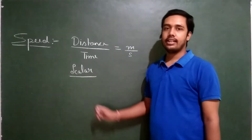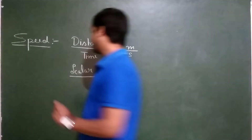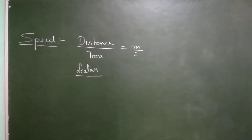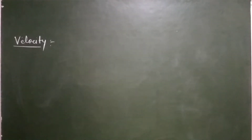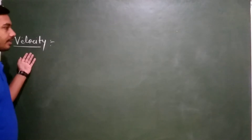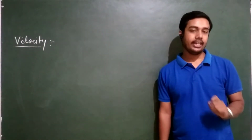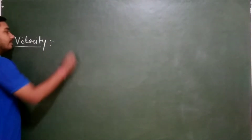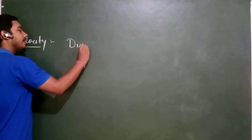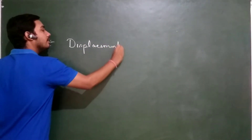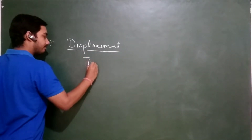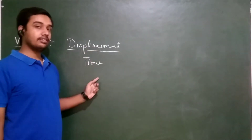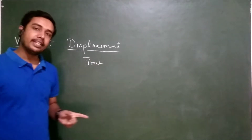Now we will study the second topic, that is velocity. Velocity is a vector quantity and it depends on displacement. Velocity is defined as displacement covered per unit time. The only difference between speed and velocity in the definition is: speed is distance covered per unit time, while velocity is displacement covered per unit time.